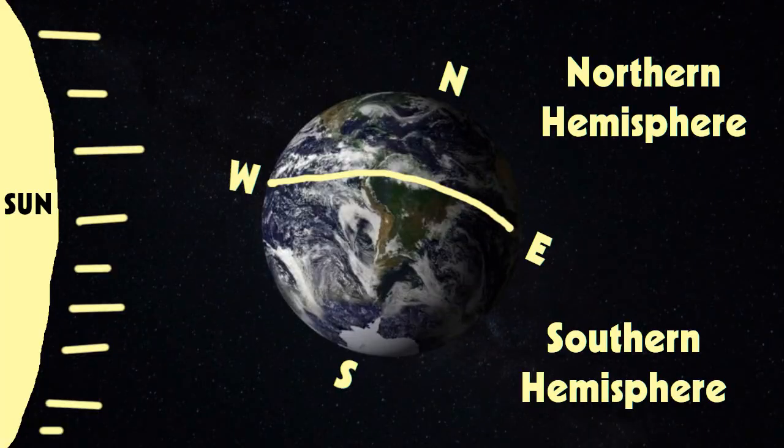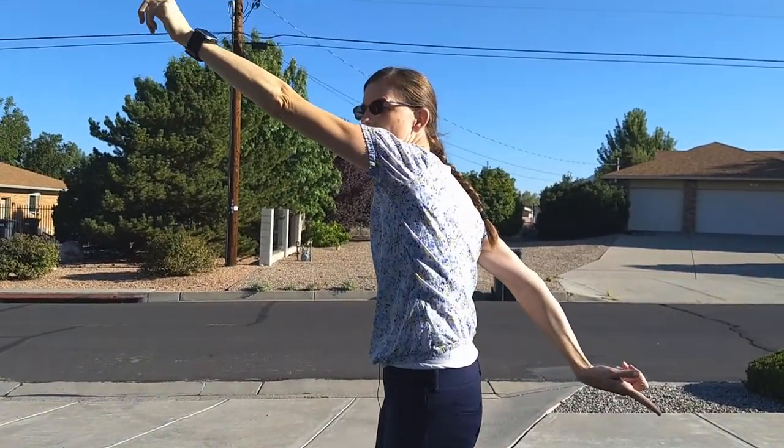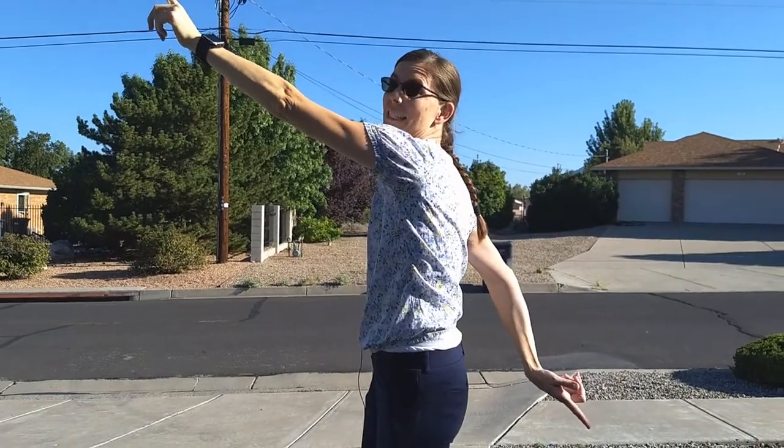If we were in the southern hemisphere, like Australia or South Africa or South America, then the sun would always be a little bit to the north, and our shadow would point to the south. Since the sun rises in the east and sets in the west, our shadow is going to start pointing out to the west and move to the east.